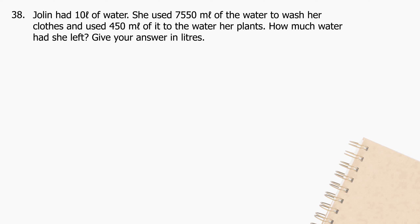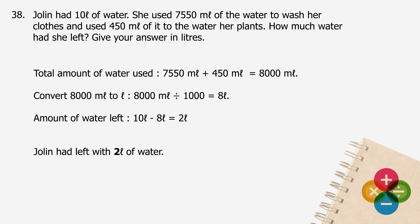Question 38: Jolin had 10 liters of water. She used 7,550 milliliters to wash her clothes and 450 milliliters to water her plants. How much water had she left? Give your answer in liters. The total amount of water used will be 7,550 ml plus 450 ml equals 8,000 ml. Converting 8,000 ml to liters gives 8 liters. The amount of water left will be 10 liters minus 8 liters equals 2 liters. Jolin had 2 liters of water left.